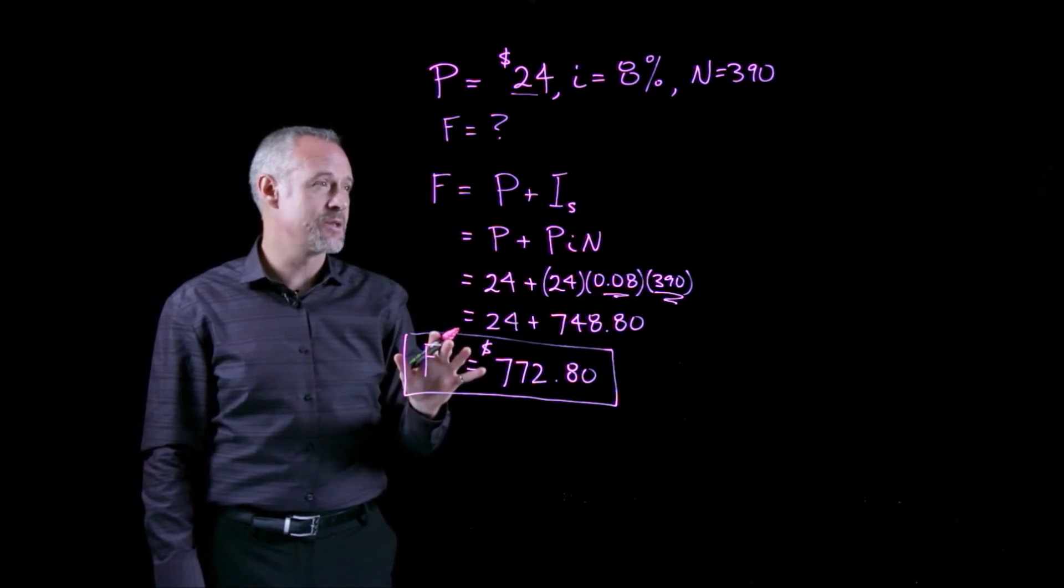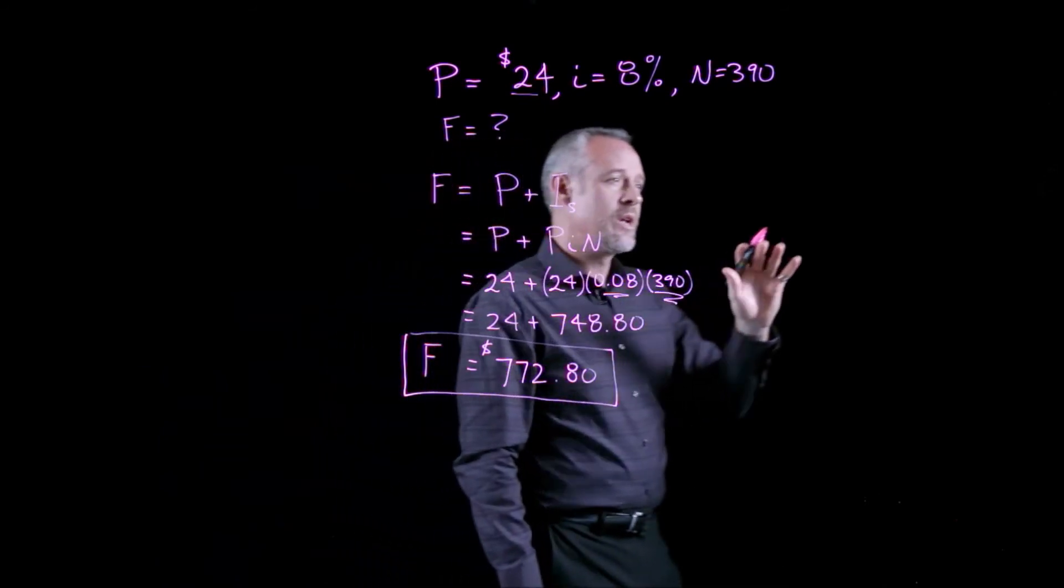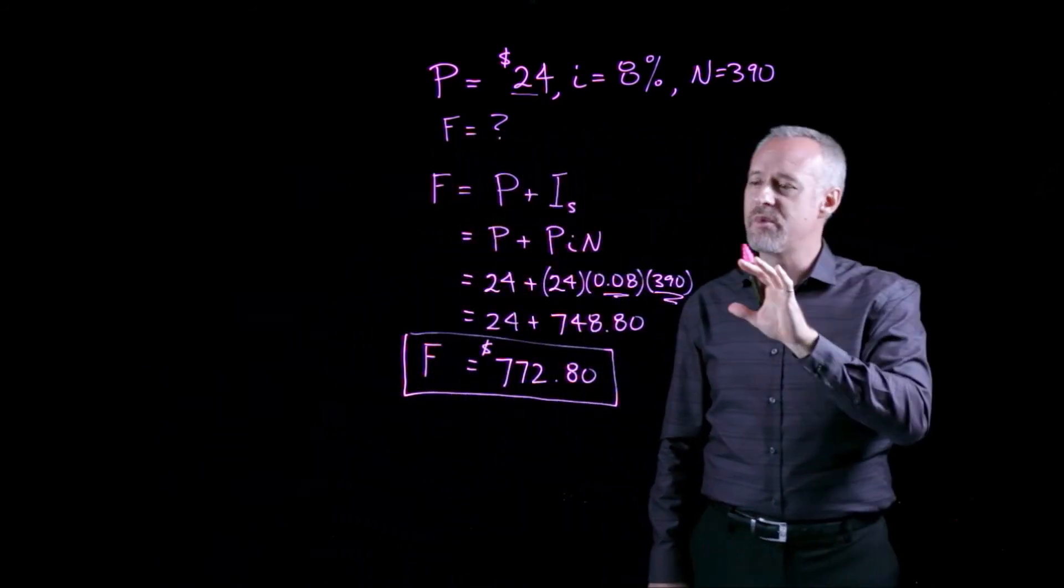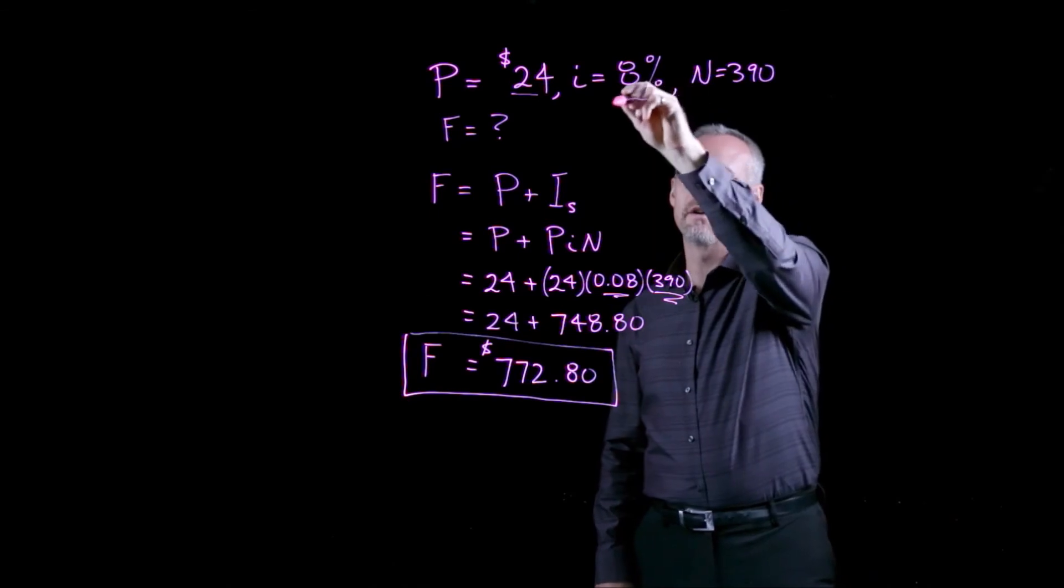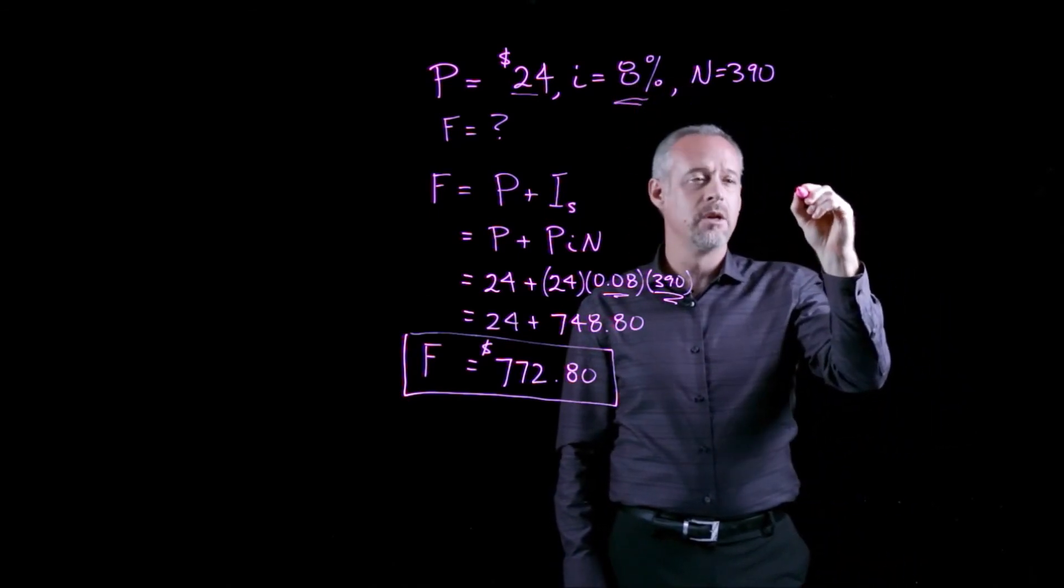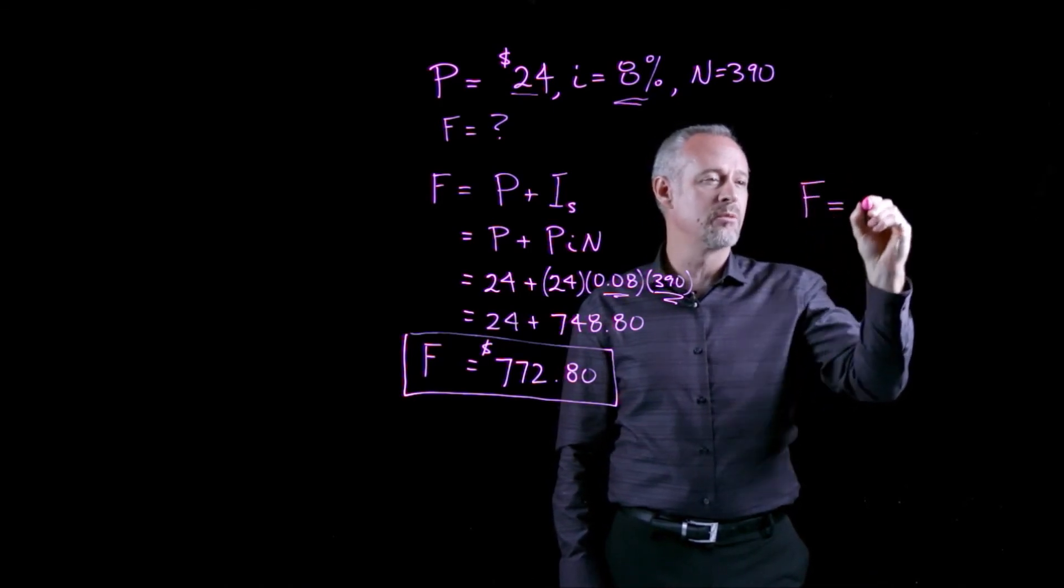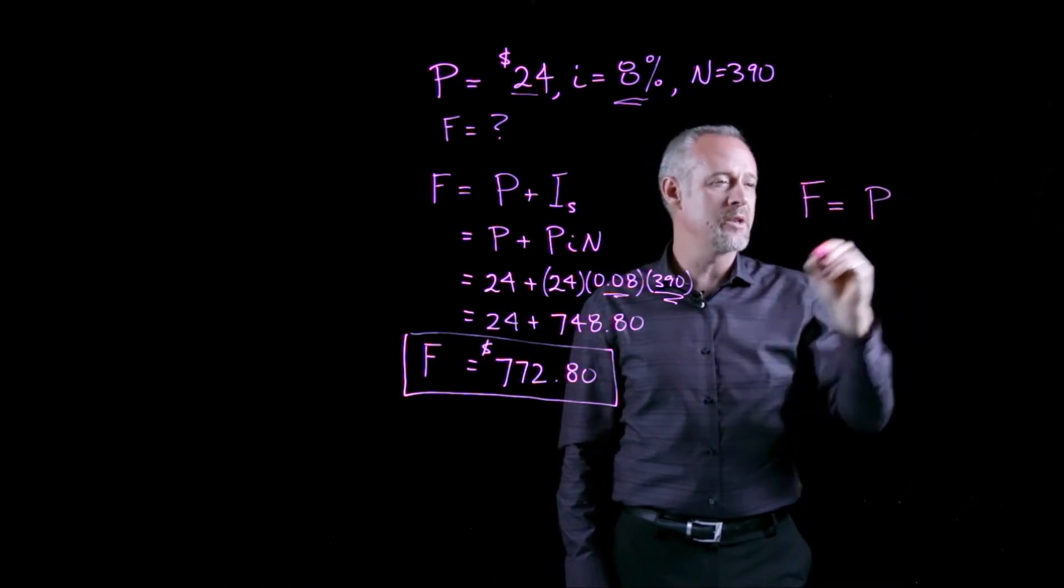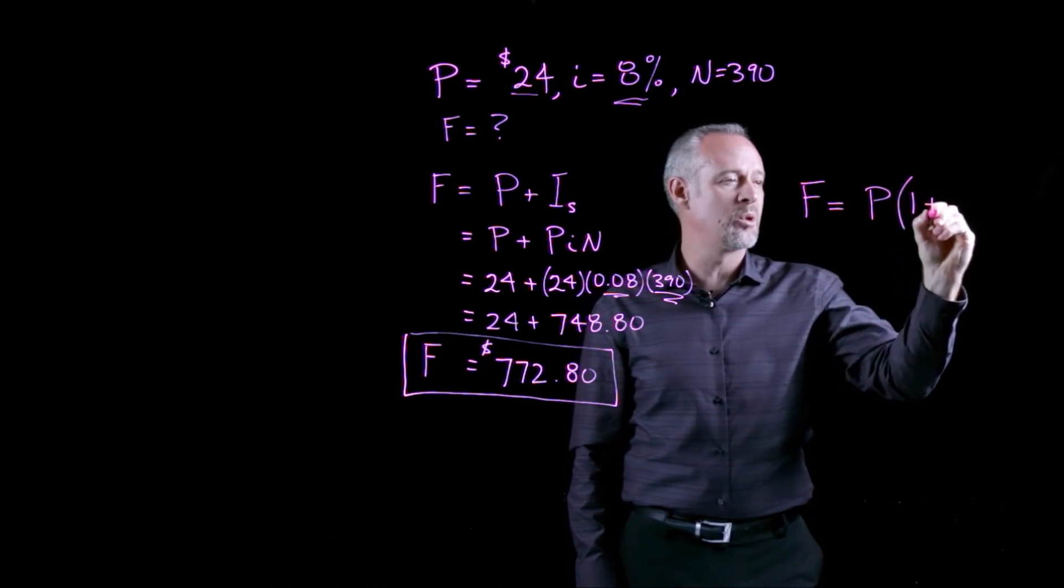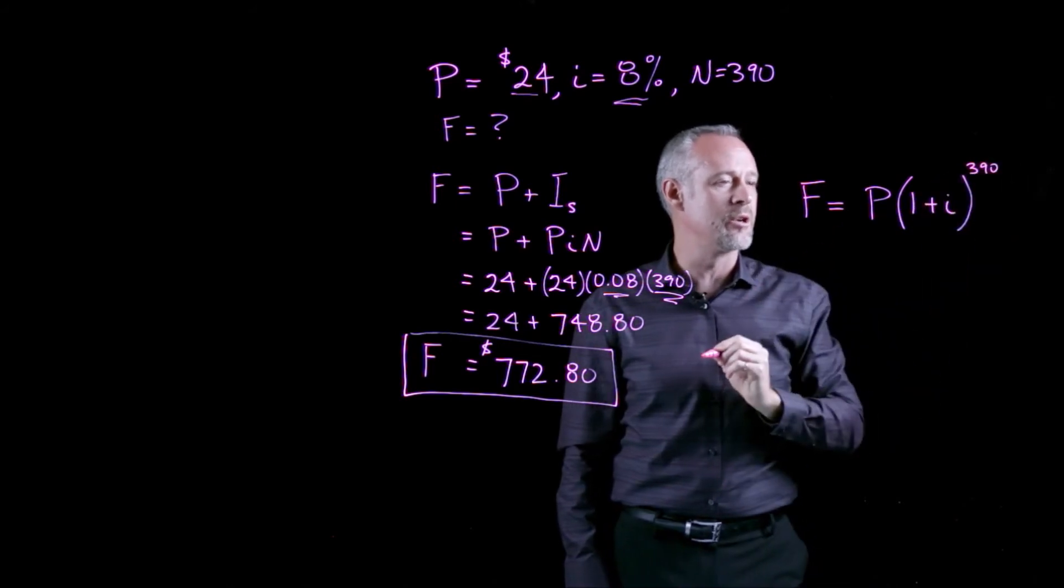Well, let's contrast this to the concept of compound interest. So, if we look at the same problem and assume that the 8% was not simple interest, but rather compound interest, then the future value of the investment will be the present value, times 1 plus the interest rate, raised to the power of the number of years.